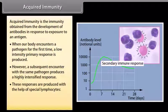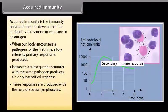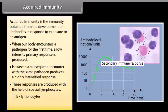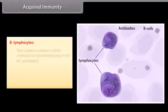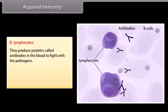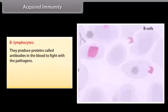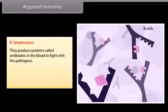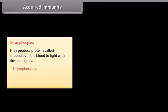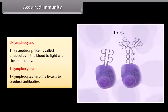These responses are produced with the help of special lymphocytes: B-lymphocytes and T-lymphocytes. B-lymphocytes produce proteins called antibodies in the blood to fight with the pathogens. T-lymphocytes help the B-cells to produce antibodies.